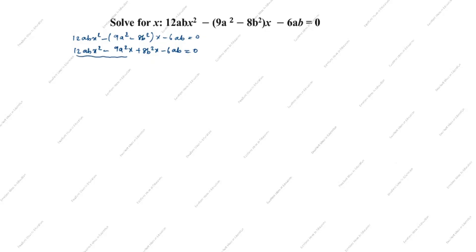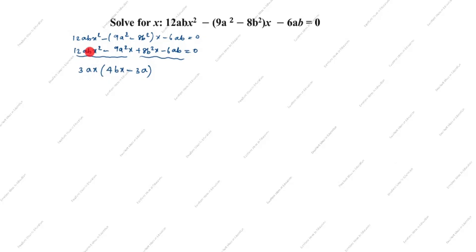Next we look for common factors. In 12 and 9 the common factor is 3, and here we have 'a' and 'x' common. So we take 3ax outside: 3ax open bracket — 3 fours are 12, so bx; 3 threes are 9, so minus 9a²x. This gives 3ax(4bx minus 3a).